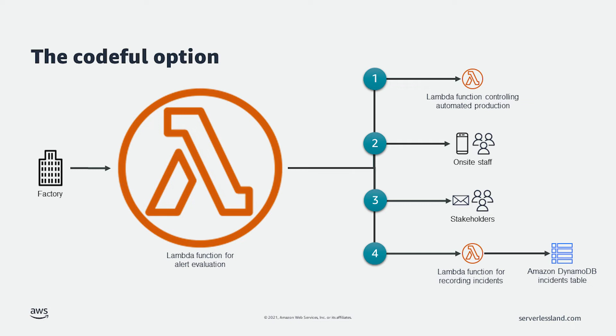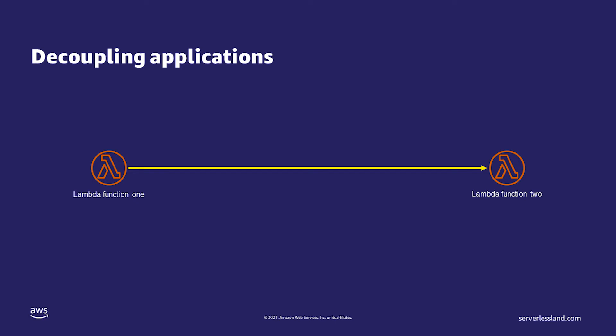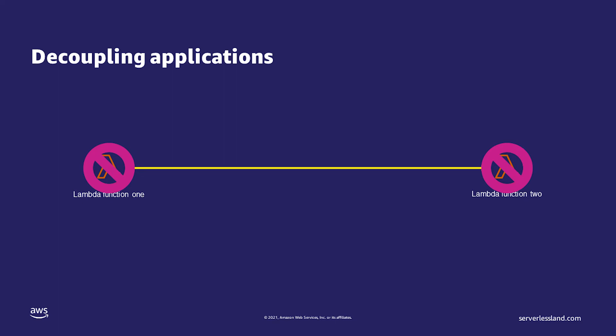This brings me to my next use case: decoupling applications to increase application reliability and uptime. When building applications, it is easy to get caught in the trap of functions calling functions and building in unneeded dependencies. This is no different when using serverless. An anti-pattern in serverless development is to invoke one Lambda function from another Lambda function. A better pattern is for the first Lambda function to publish a message on a topic and the second Lambda function to subscribe to that topic.